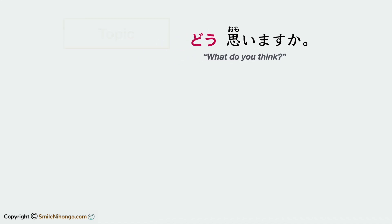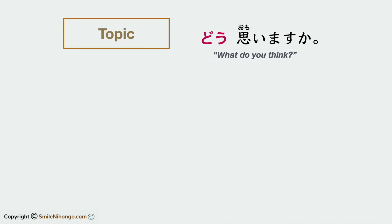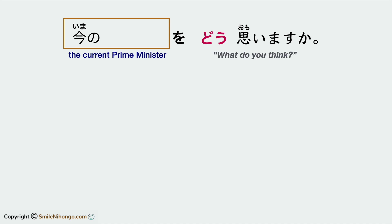Now, to indicate the topic of the question — as in, 'what do you think of the topic' — you mark it with the particle o as the direct object that you are thinking of, like this: トピックをどう思いますか? For instance, if you want to ask 'what do you think of the current prime minister?' then you say 今の総理大臣をどう思いますか?